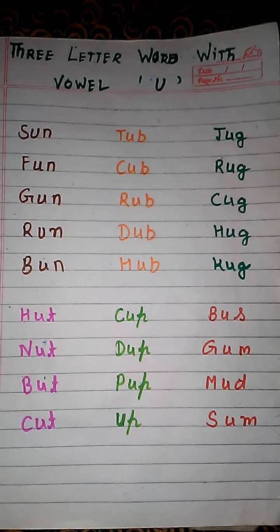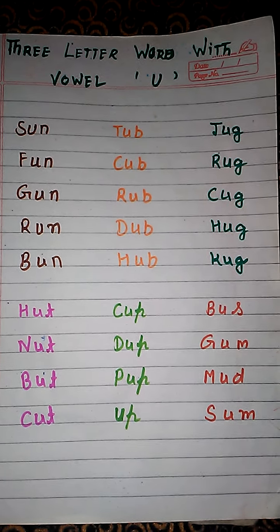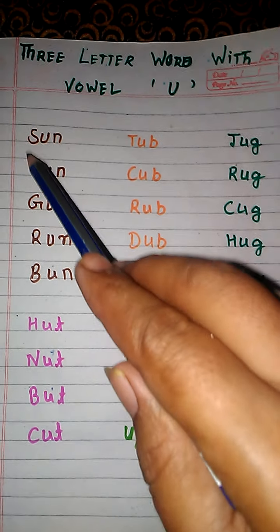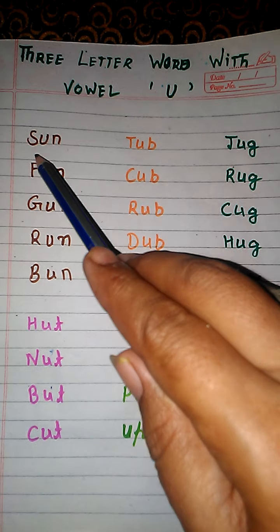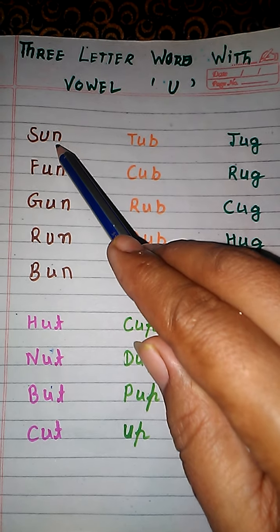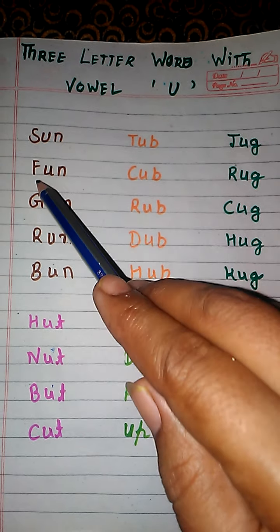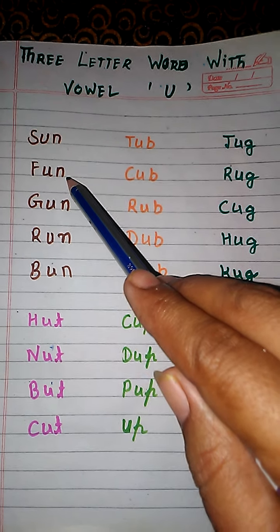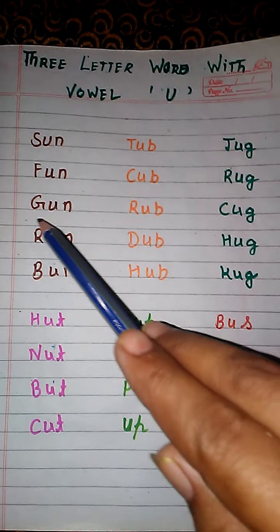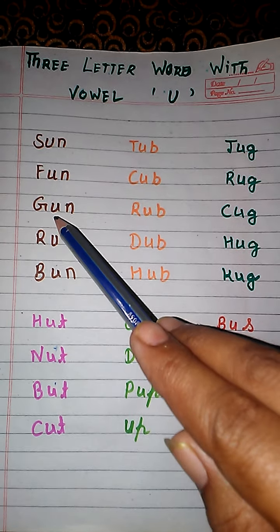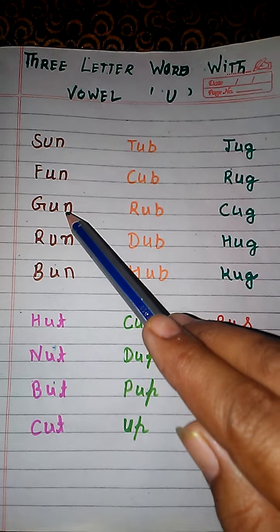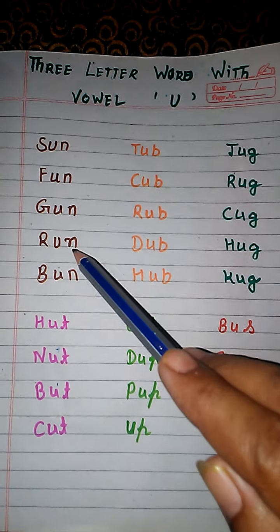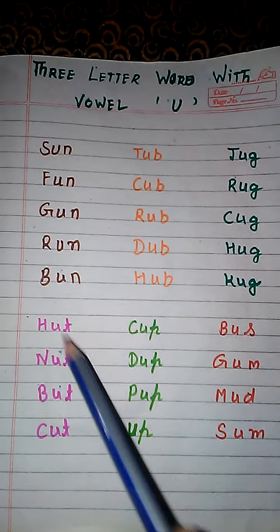Now we will repeat it with phonic sound. S, U, N. Sun. F, U, N. Fun. G, U, N. Gun. R, U, N. Run.